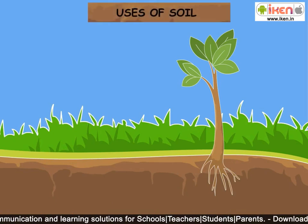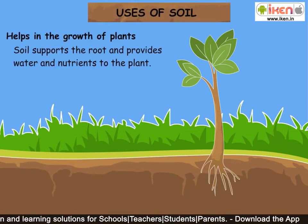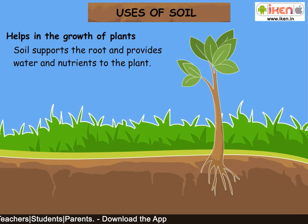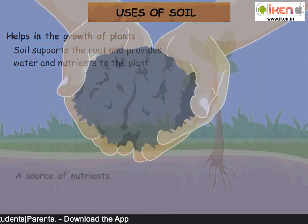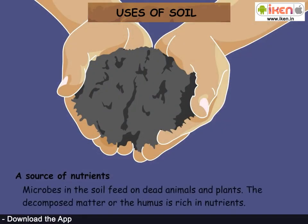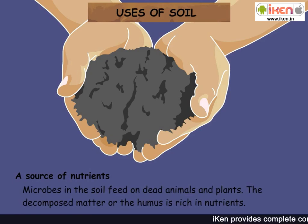Uses of soil: Soil helps in the growth of plants. It supports the root and provides water and nutrients to the plant. Microbes in the soil feed on dead animals and plants. The decomposed matter, or humus, is rich in nutrients.